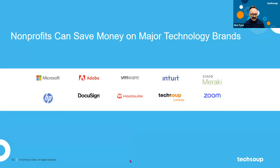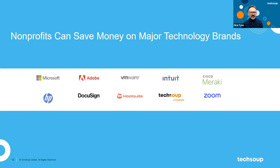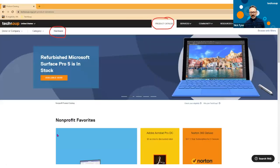There are many other brands in the TechSoup catalog. I highlighted three of the most popular, but lots of nonprofits need different, more specialized things. I encourage you to take a look through the catalog — you may stumble across a couple of things that would be super helpful for your nonprofit that I haven't highlighted specifically in today's presentation.